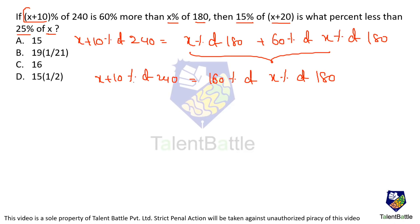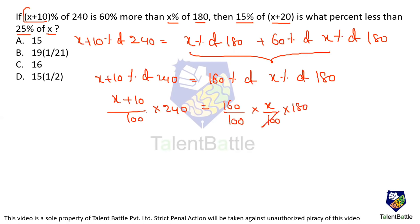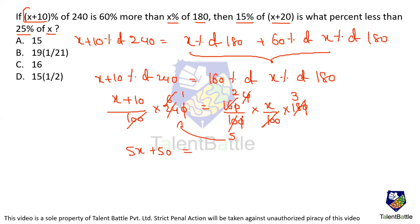Let's identify the value of X by writing percentages as fractions. So (X plus 10) divided by 100 into 240 equals 160 divided by 100 into X divided by 100 into 180. Cancelling 100s and simplifying zeros: after cancellation we get 5X plus 50 equals 2 into 3 which is 6X. That implies X equals 50.